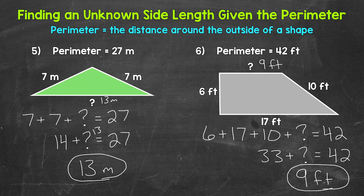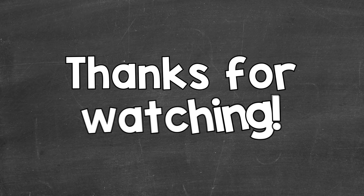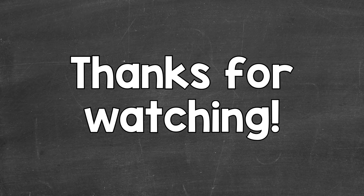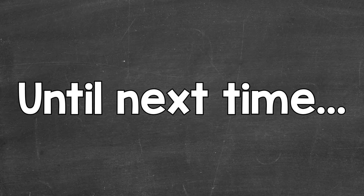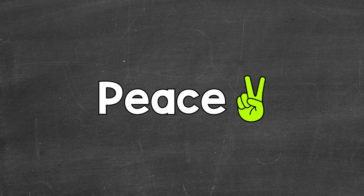So there you have it — that's how to find an unknown side length given the perimeter. I hope that helped. Thanks so much for watching. Until next time, peace.